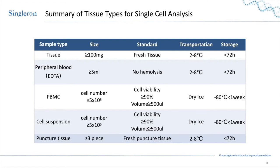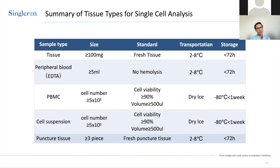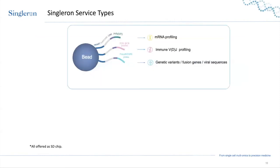We also accept PBMCs and cell suspensions. These cells can be frozen and transported on dry ice. We require a cell number of more than 500,000, a cell viability above 90%, and a volume of more than 500 µL. These cells should be stored at –80°C for less than one week, otherwise viability will be affected. We also accept biopsies — they are small, so we require at least three pieces per puncture. They can be stored in our CellLife buffer and transported at cool temperatures for up to 72 hours.